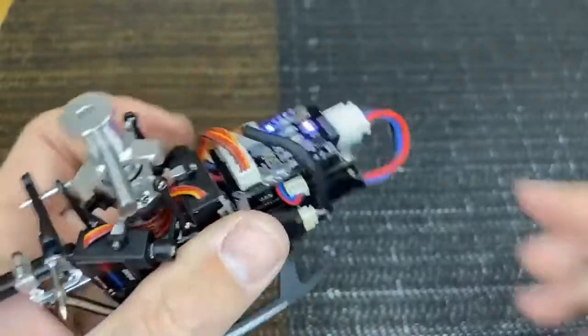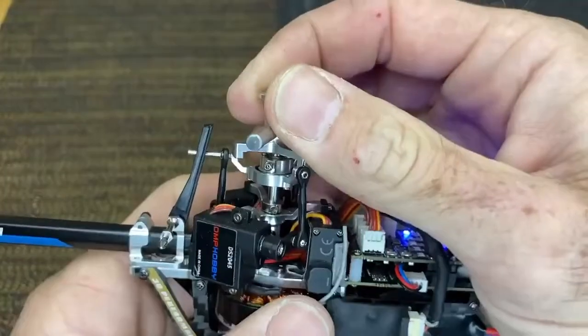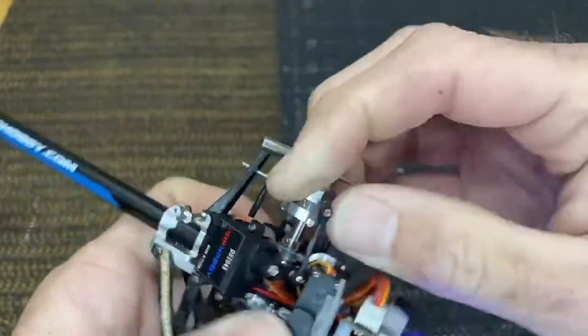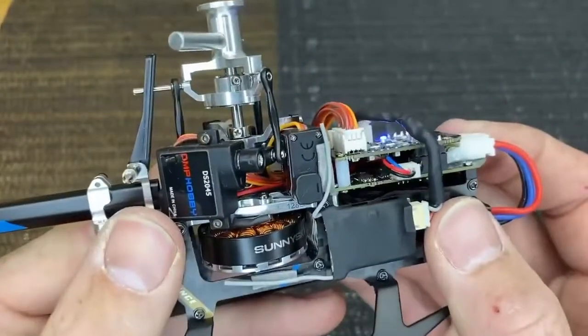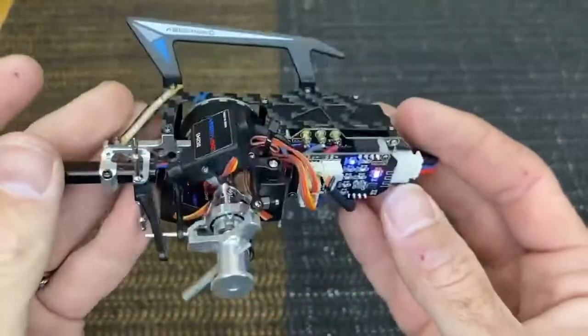Once you've achieved servo centering mode, put your swashplate leveler down and check that all three sides are level. Adjust your servos accordingly.